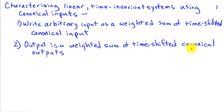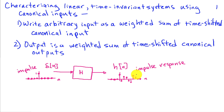That's a bit abstract, so let's make it more concrete. We're going to use the impulse response as a canonical input for this particular lecture. It turns out that we can write an arbitrary signal as a weighted sum of shifted impulses.